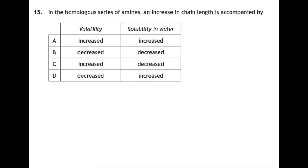Question 15. In the homologous series of amines, an increase in chain length is accompanied by what? In general, an increase in chain length means that your volatility will go down because your molecule is getting bigger. So your volatility is going to be decreased. So it's probably going to be one of these two answers. And usually an increase in chain length also means that your solubility will decrease because it's becoming more oily than it is like water. So the answer to this one is B.